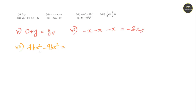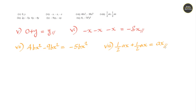Question number 7: 4bh square plus 4bh square minus 9bh square. Answer would be minus 5bh square. Question number 8: 1/2 x plus 1/2 x plus 1/2 x plus 1/2 x. Answer would be 8/2 or 1 whole x.